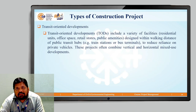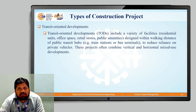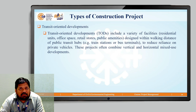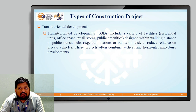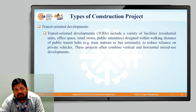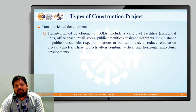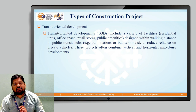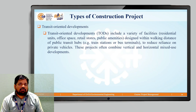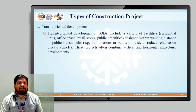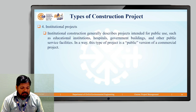Another type is transit oriented developments, or TODs. These include a variety of facilities — residential units, office spaces, retail stores, and public amenities — designed within walking distance of public transit hubs, transportation terminals, or bus terminals, to reduce reliance on private vehicles. In this type of project, the location of buses and local trains is considered, and the project is constructed accordingly.